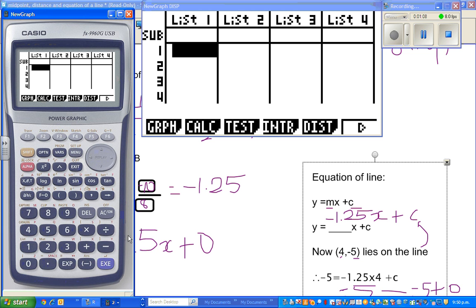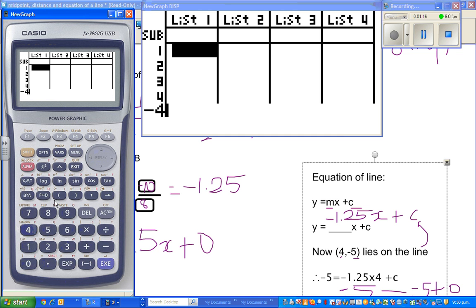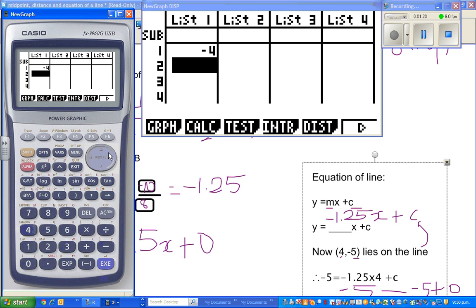I'm going to enter the first point, negative 4, 5. In list 1, I'll enter negative 4, execute, and in list 2. This is the first point.